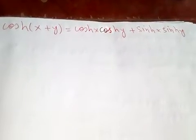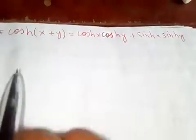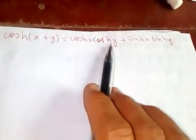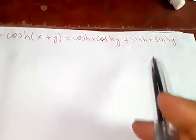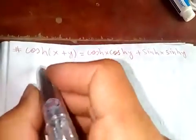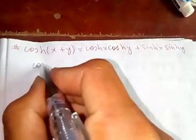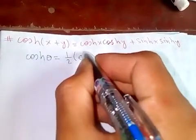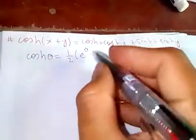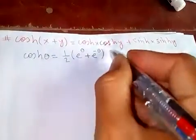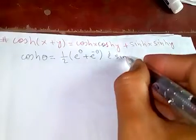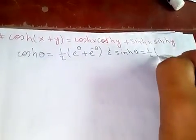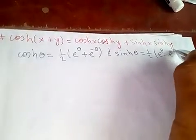Hi, thanks for watching my video. Today I'm going to prove cosh(x+y) = cosh(x)cosh(y) + sinh(x)sinh(y). Let's define first of all cosh(θ) in general: it is half of e to the θ plus e to the negative θ. And sinh(θ) is half of e to the θ minus e to the negative θ.